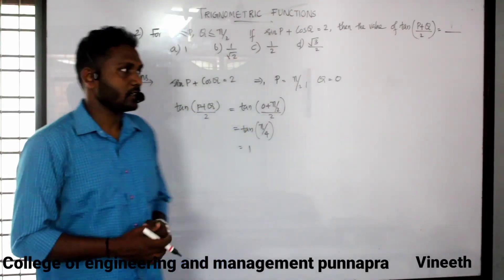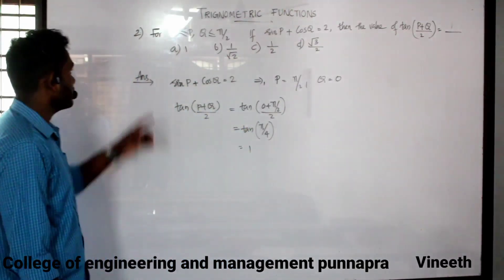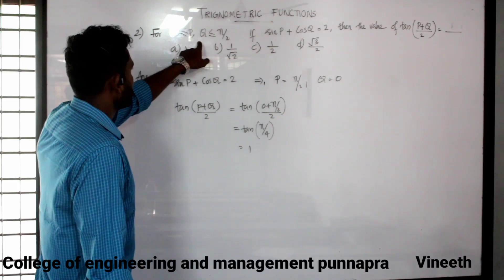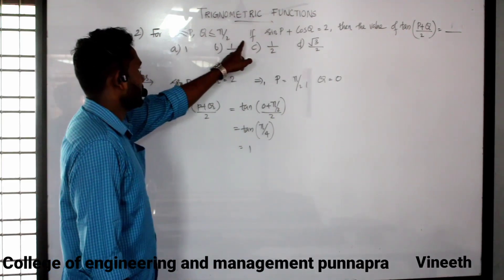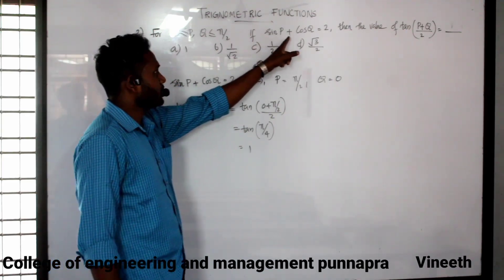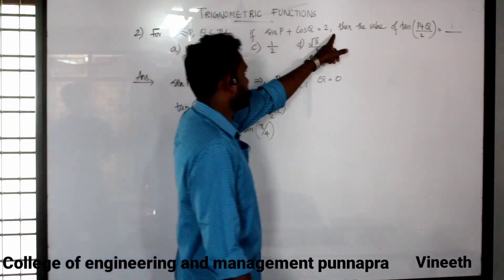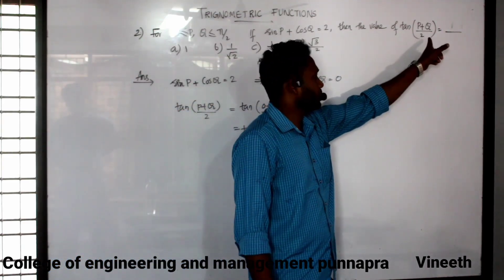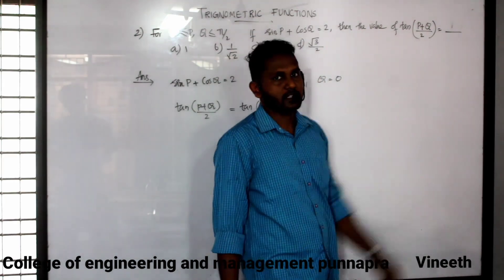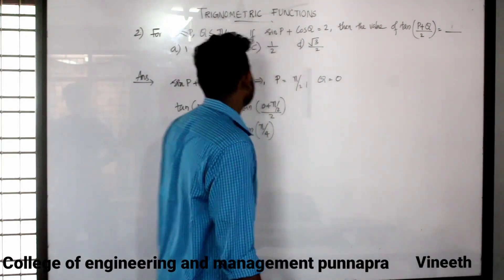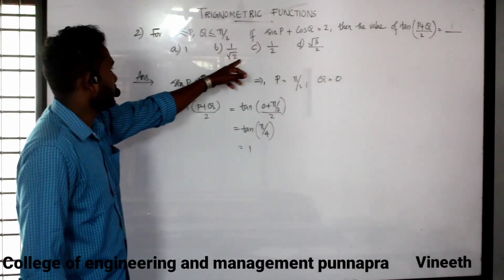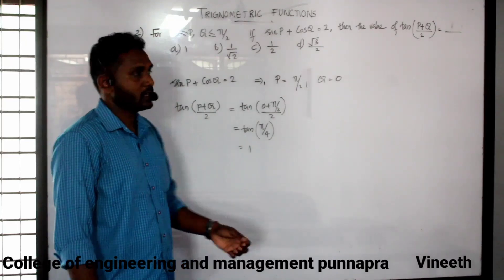Now we take question number 2. For Q equal to 5: if sin P plus cos is expected, then the value of tan P plus P by 2 is expected. The options are 1, 1 by 2, 1 by 2, 1 by 2.